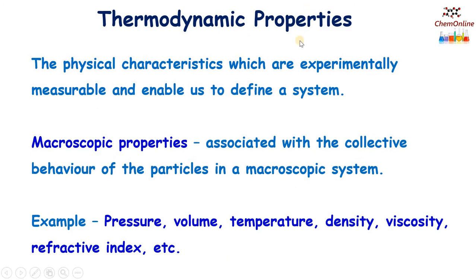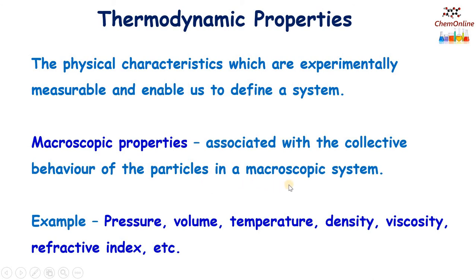Next is about thermodynamic properties. Thermodynamic properties are the physical characteristics which are experimentally measurable and help to define a system — properties like pressure, volume, temperature, density, etc. Since thermodynamics is the study of bulk behavior of the system, thermodynamic properties are also called macroscopic properties. Macroscopic properties are associated with the collective or bulk behavior of the particles in a macroscopic system. Examples include pressure, volume, temperature, density, viscosity, etc.